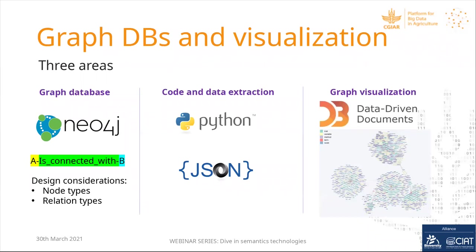Now a little bit about graph databases and visualization. There are three areas involved in achieving something like this. The first is to think about when you need a graph database and for what purpose. In terms of ontologies, when a particular term is connected to another term and there is a kind of relationship in that connection, and also when you want to generate new knowledge about how the nodes are connected internally in the ontology — then you want to move your data into a graph database.